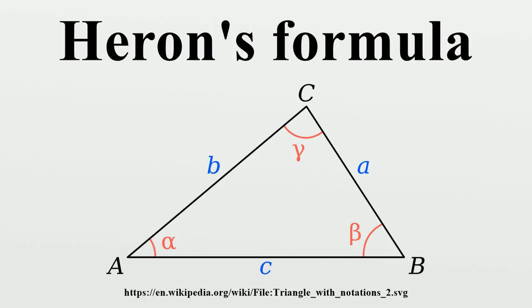Three other area formulas have the same structure as Heron's formula but are expressed in terms of different variables. First, denoting the medians from sides a, b, and c respectively as m_a, m_b, and m_c.